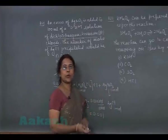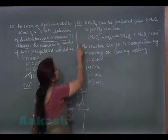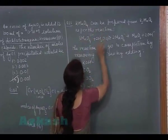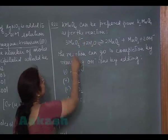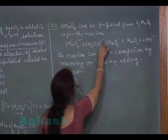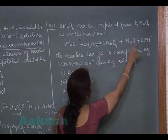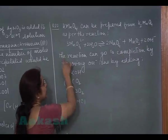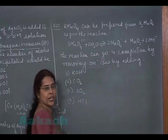Next question, question number 22. KMNO4 can be prepared from K2MnO4 as per the reaction. This is MnO4 2- plus 2 H2O produces 2 MnO4- plus MnO2 plus 2 OH-. The reaction can go to completion by removing OH ions by adding.